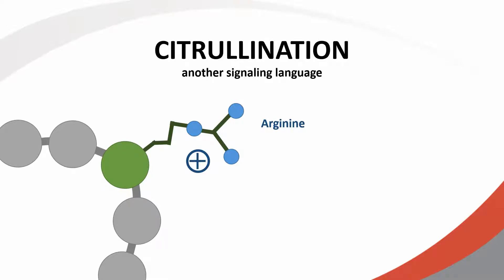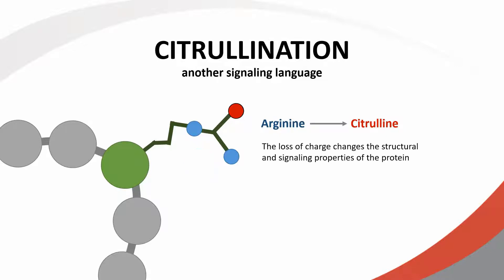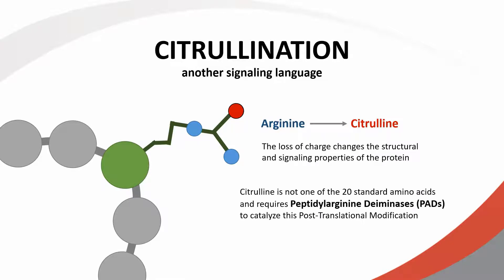The deimination of arginine to create citrulline is another example of communication and signaling pathways. The process, called citrullination, results in a loss of charge, changing the protein's physical properties and affecting its biological role in its pathway. The process necessarily requires peptidylarginine deiminases, or PADs, as citrulline is not one of the standard 20 amino acids.